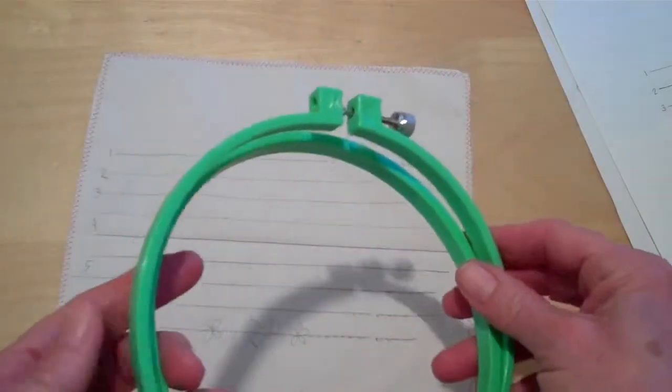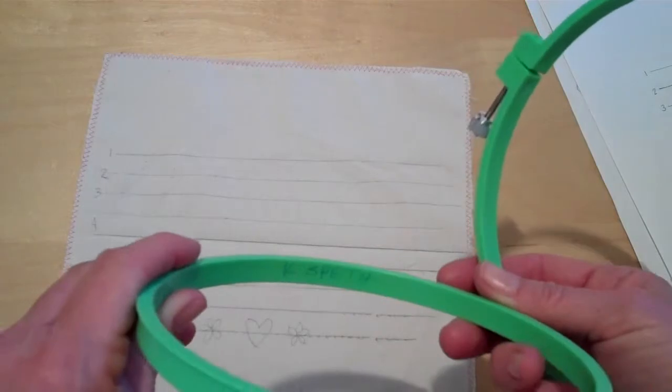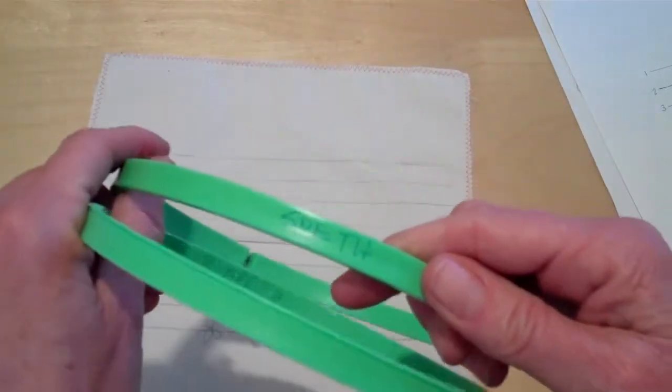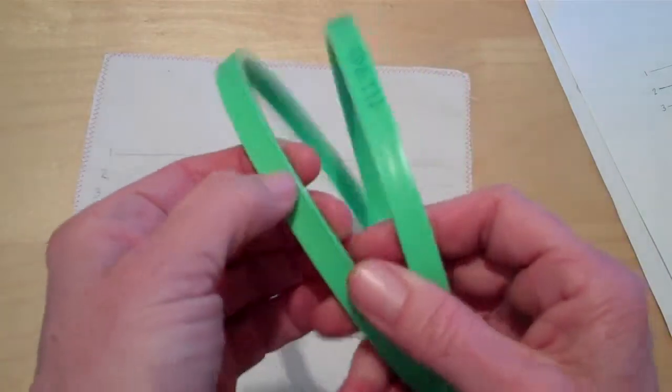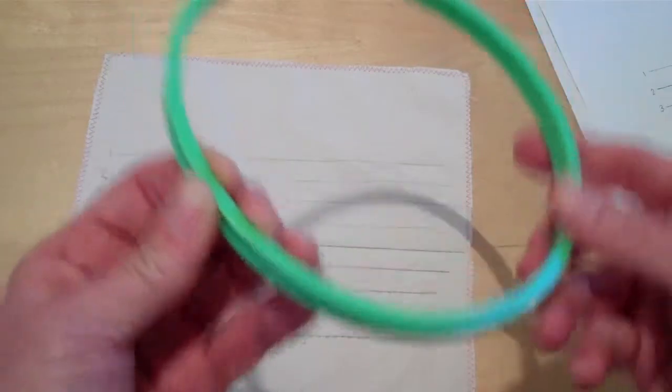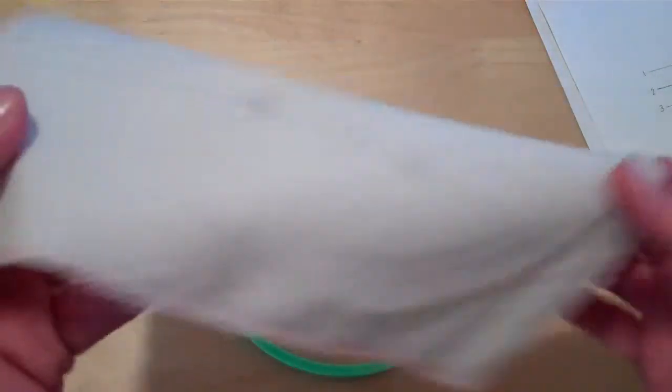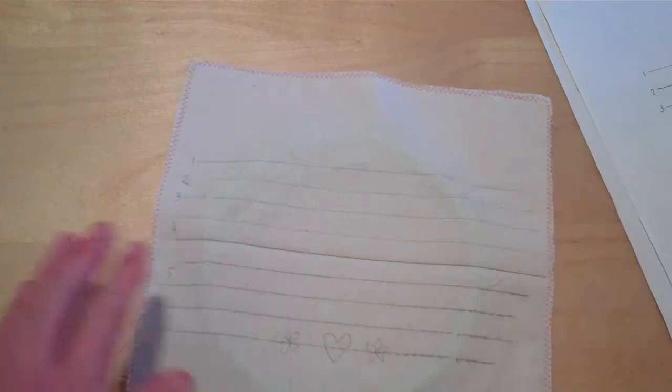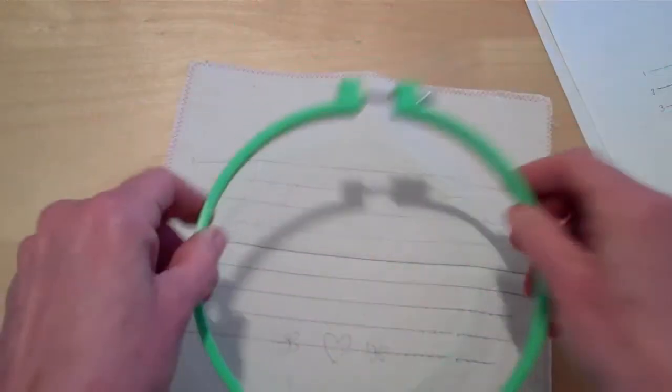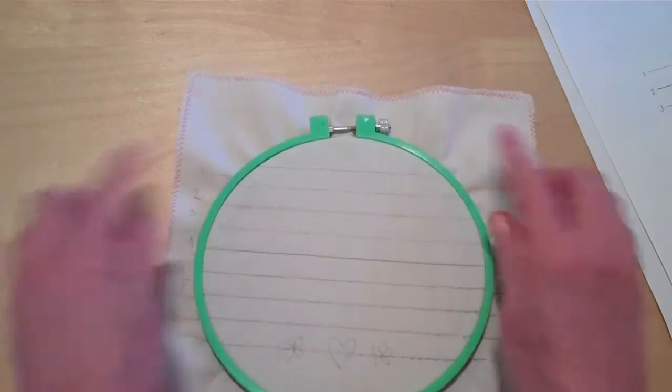Your embroidery hoop comes in 2 parts. So when you get it, get a sharpie and put your name on both parts of the hoop. This hoop has a little lip on the top, the inner loop. So that will always be up. So you'll place that on the table, place your fabric on top of the inner loop, place your adjustable loop on top and slide it down.